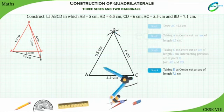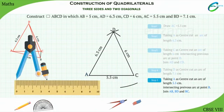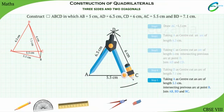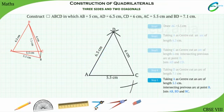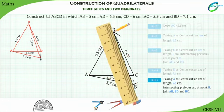Step 5: Since AB is equal to 5 cm, placing the pointer at point A and making an arc of 5 cm, cut an arc intersecting the previous arc at point B. Join AB and BD.